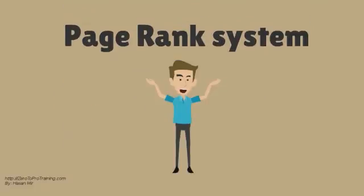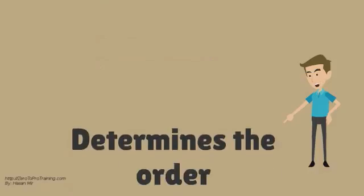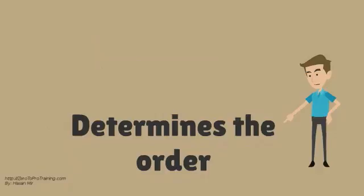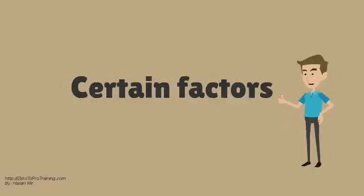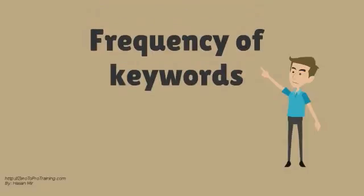Google's page rank system sets it apart from others. Google assigns each web page a relevancy score in context of keywords. The page rank of web pages determines the order in which Google displays search results. Page rank of a web page depends on certain factors. The more the frequency of a keyword used on a web page, the higher will be the page rank of that page for that keyword.